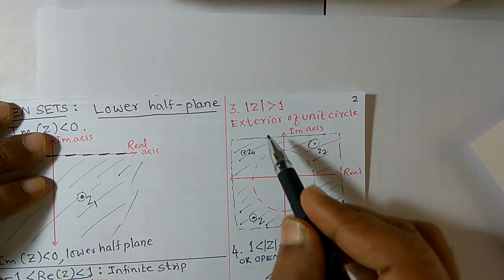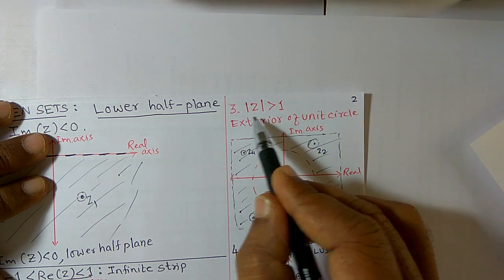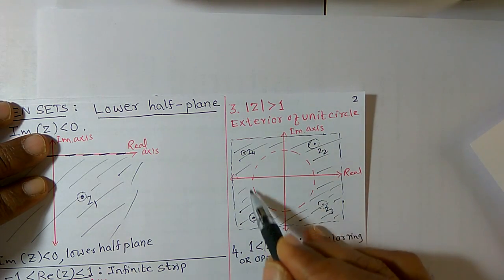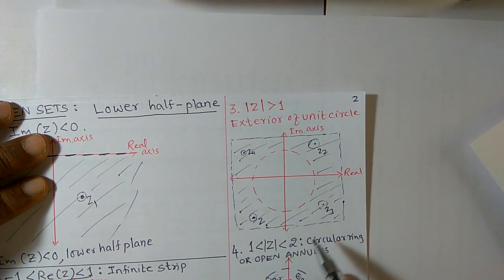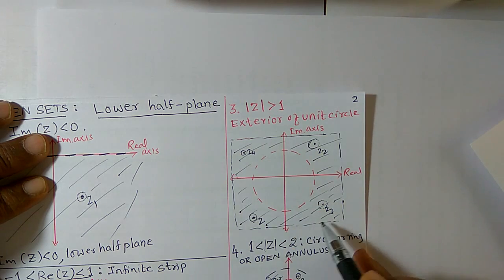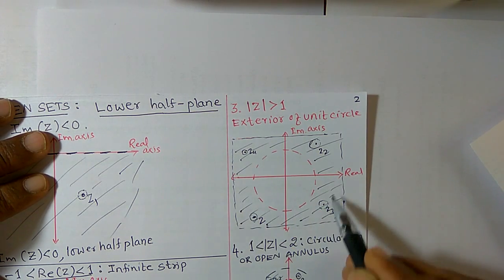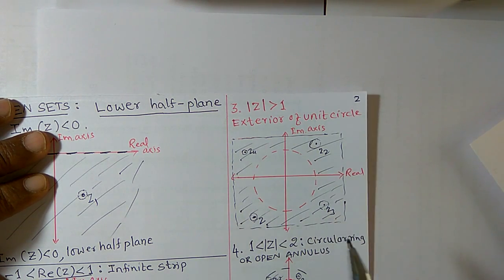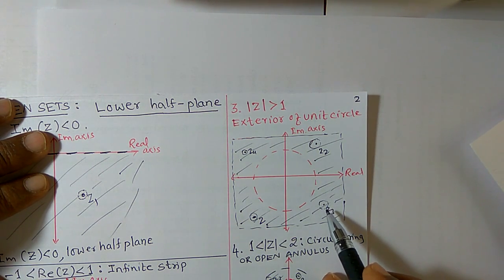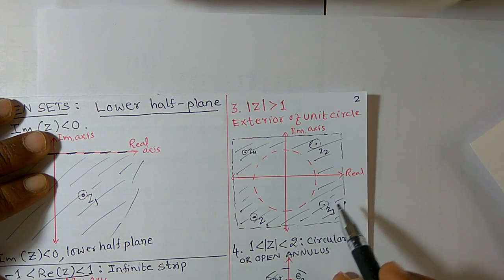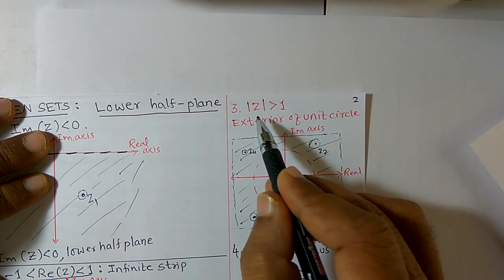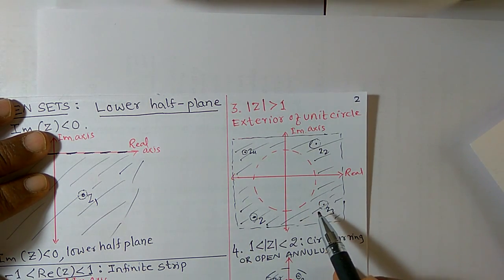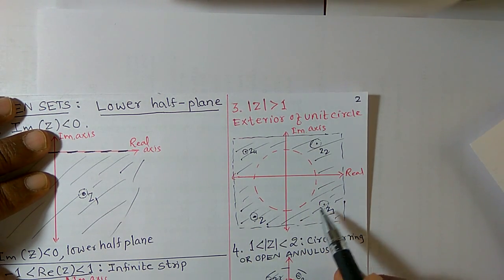Consider the next example: mod of z is greater than 1. Draw the disk. Observe the marked region — in the marked region you can take any complex number. In that case, mod of z greater than 1 is an example of an open set.